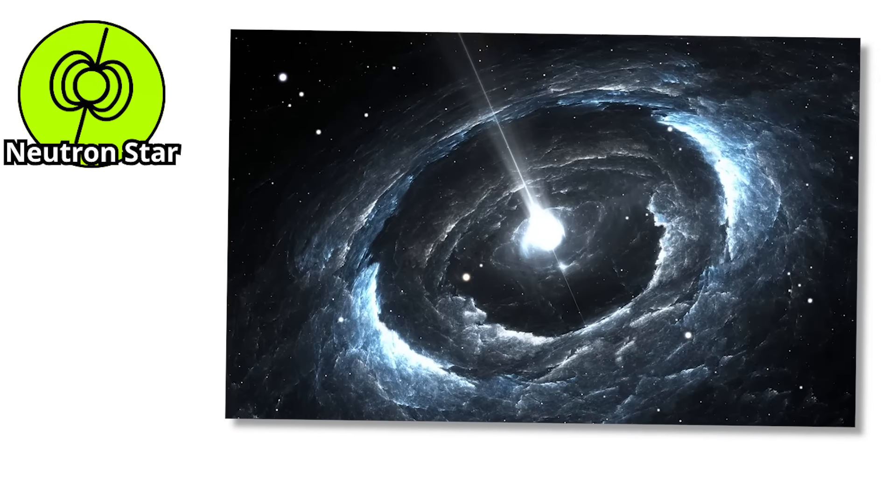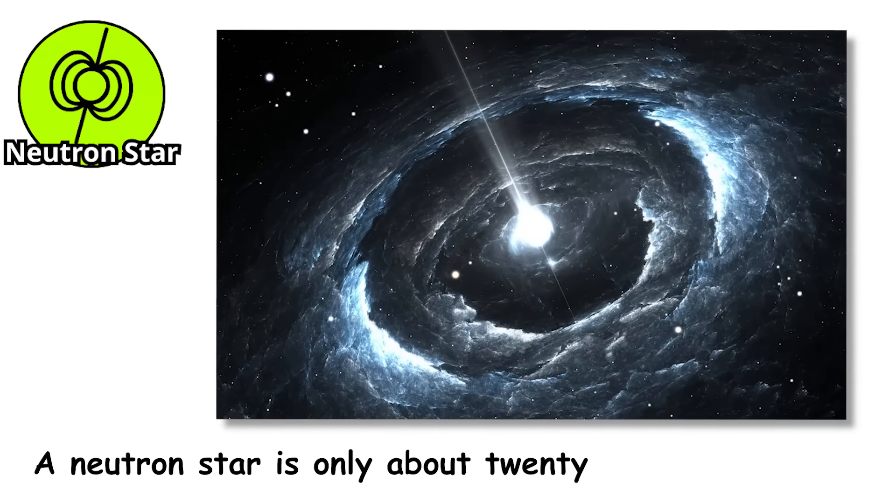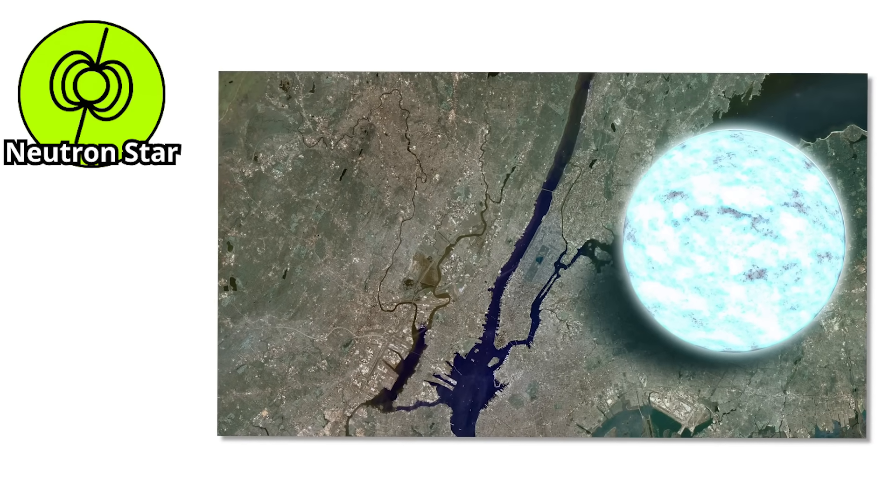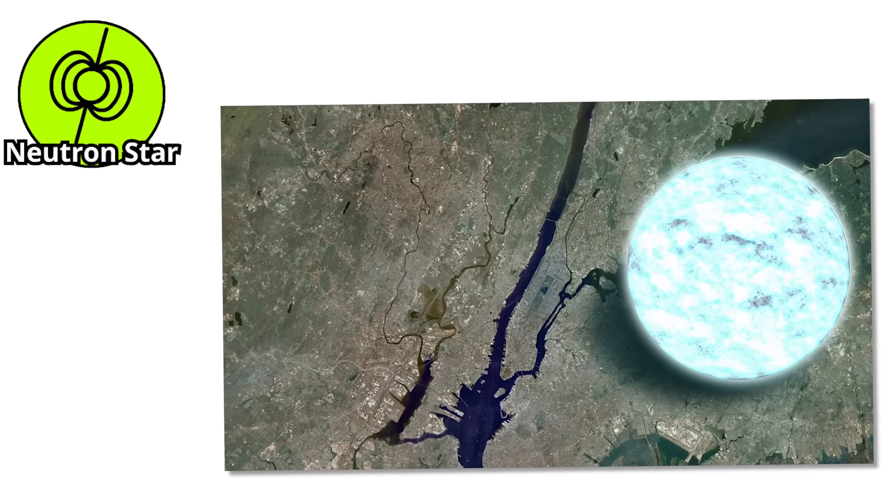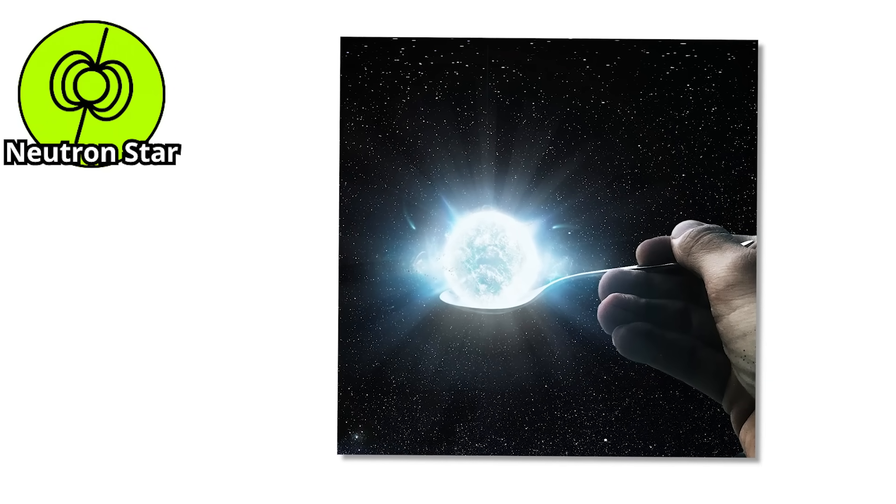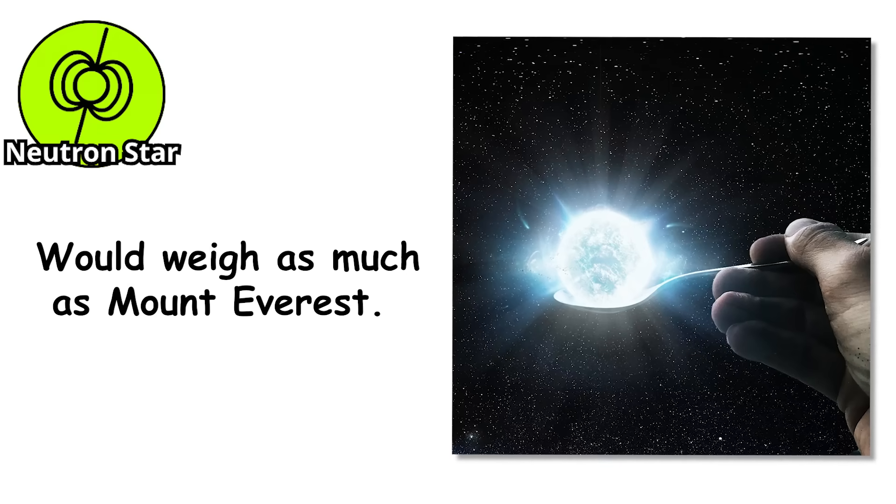A neutron star is only about 20 kilometers across, roughly the size of a city. But packed into that small space is more mass than the entire sun. Imagine stuffing 100 million skyscrapers into a single spoon. That is how dense it is. Just one teaspoon of neutron star material would weigh as much as Mount Everest.